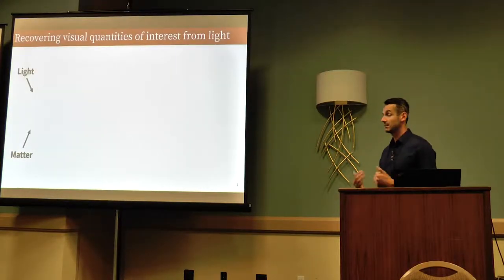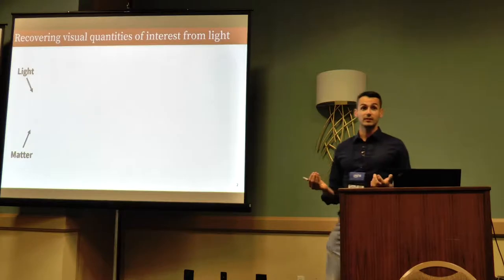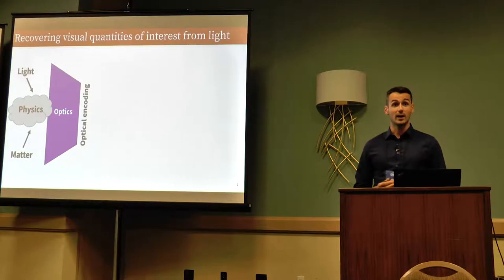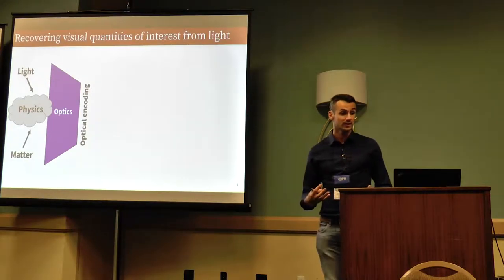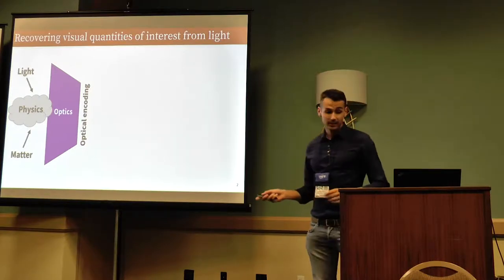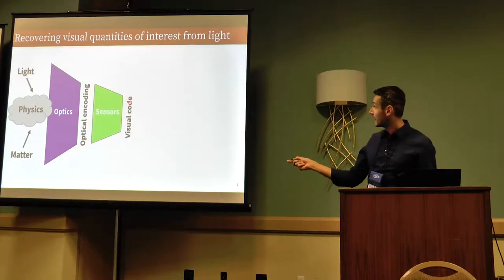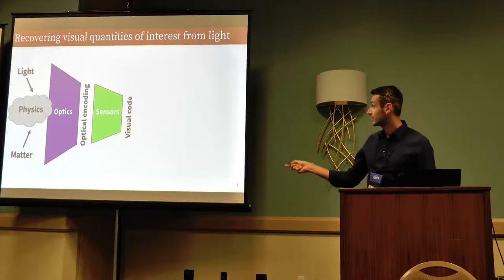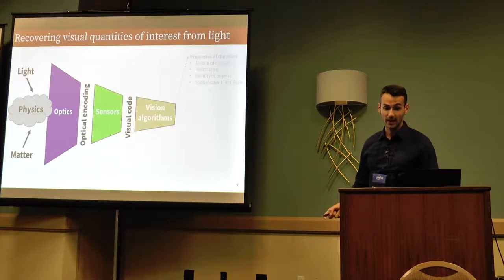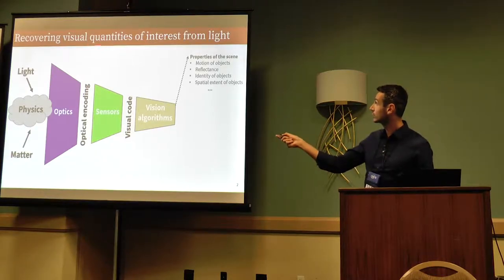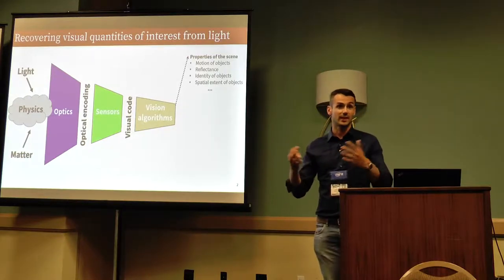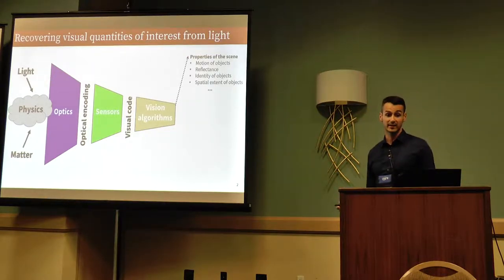So let me just step back a little. We're interested in vision, and vision is the complex interaction of light and matter through physics. We're lucky enough to have optics, and this optical encoding that has captured some of the physics property is coming to some sensor. I'll talk a lot about those, producing what I will call a visual code, and then we have our vision algorithms taking these visual codes and outputting what I will call visual quantities of interest from light.